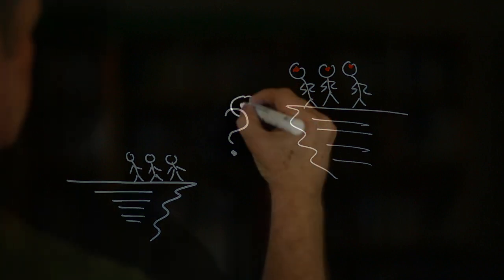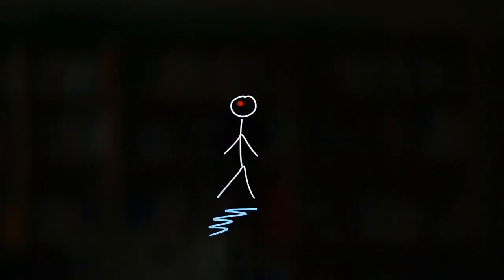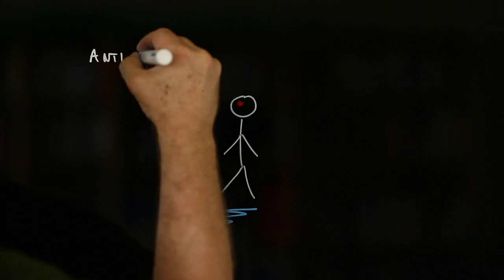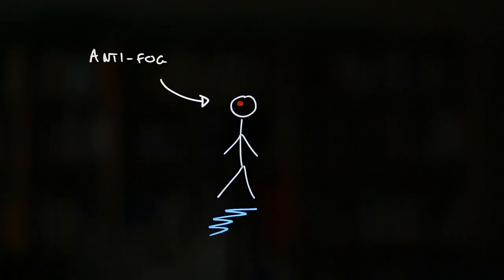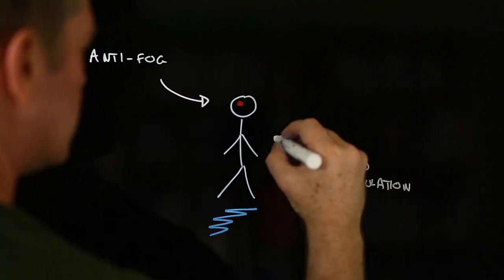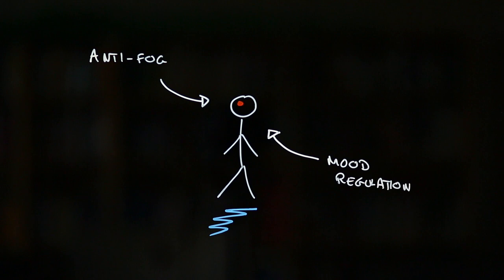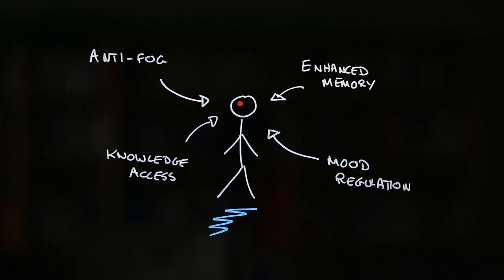Of course, there are incredible potential benefits that could come from advanced brain-machine interfaces if they're developed responsibly. Just imagine, for instance, being able to get rid of brain fog at the flick of a switch, or control your mood with the swipe of an iPhone app. Or what if you had a device that could help you recall memories with ease, or Google anything with a single thought?